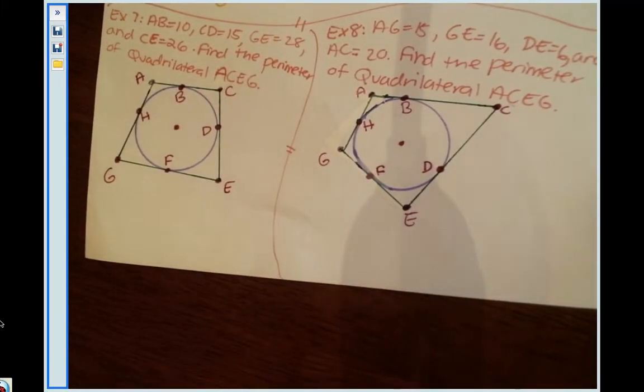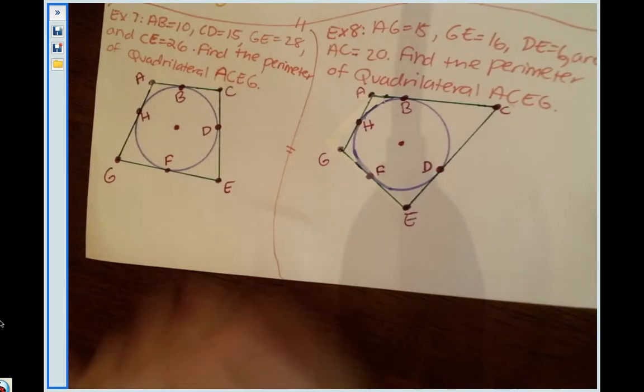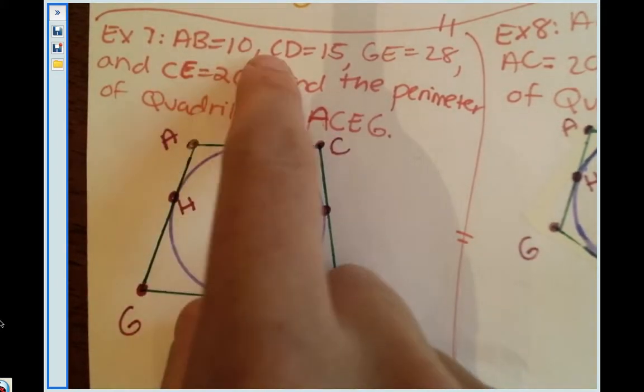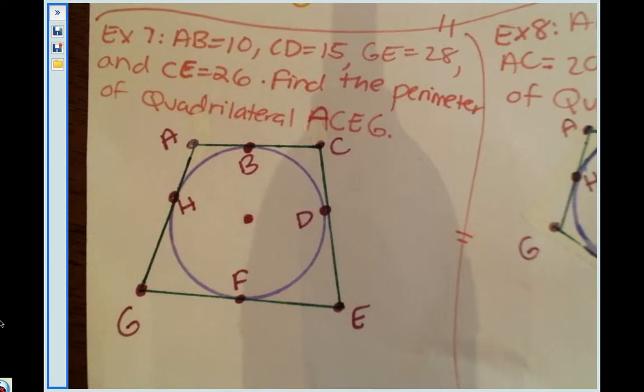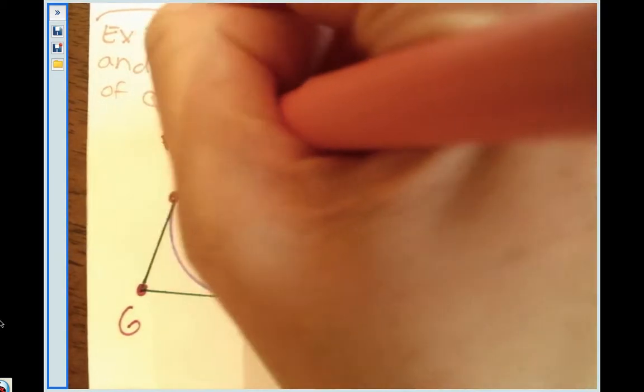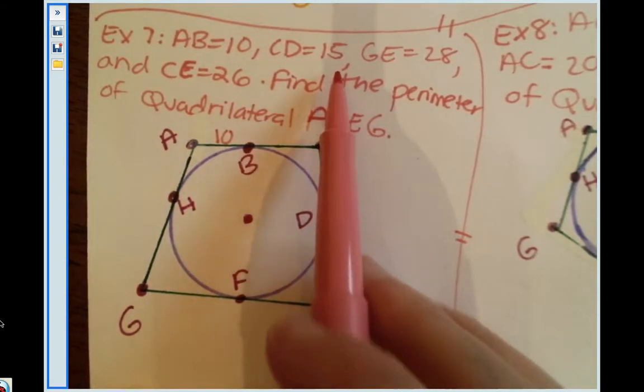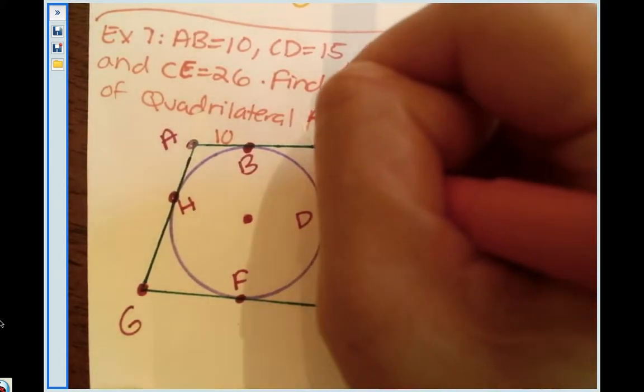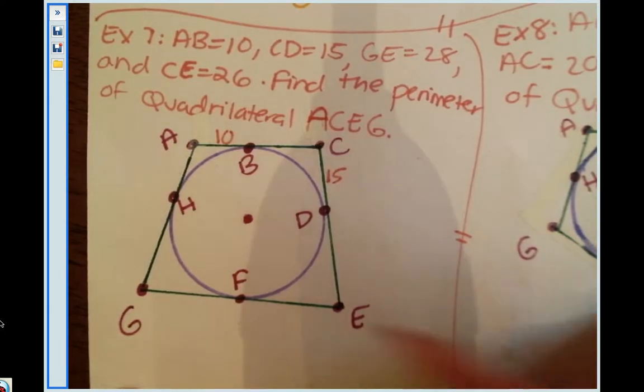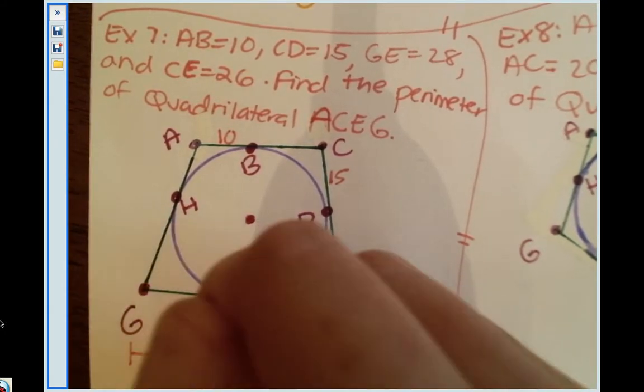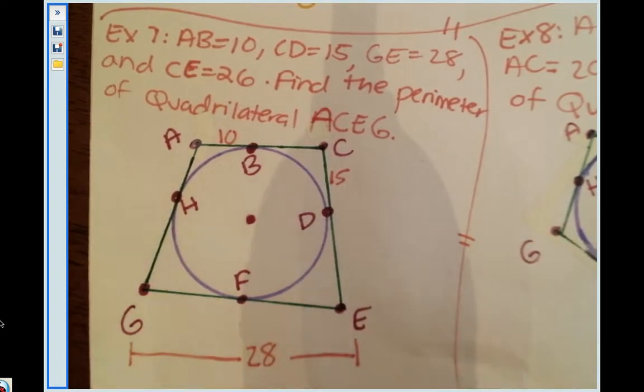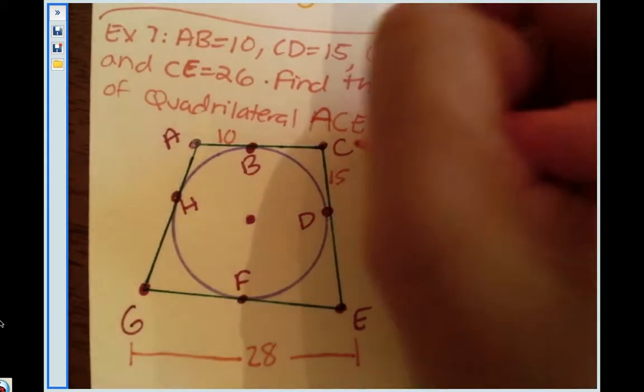In this picture, let's look at Example 7 right now. I'm going to label my picture, that's always a helpful thing to do when you're solving geometry problems. So AB is 10, CD is 15, so this piece is 15, GE is 28 so the whole thing from here to here is 28, and then CE is 26 so this whole thing is 26.